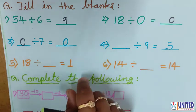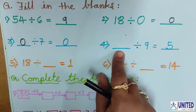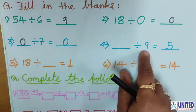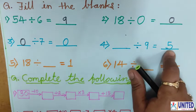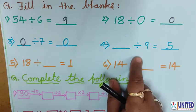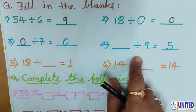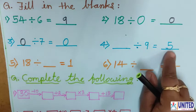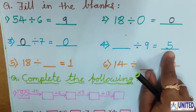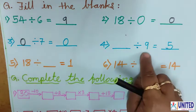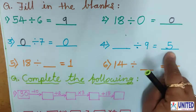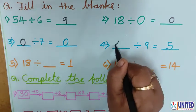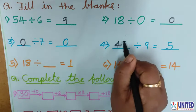Now number 4: blank divided by 9 equals 5. Here, the dividend is missing. You have to use the multiplication fact — multiply the divisor and the quotient to get the dividend. So, 9 fives are 45. We write 45 here.